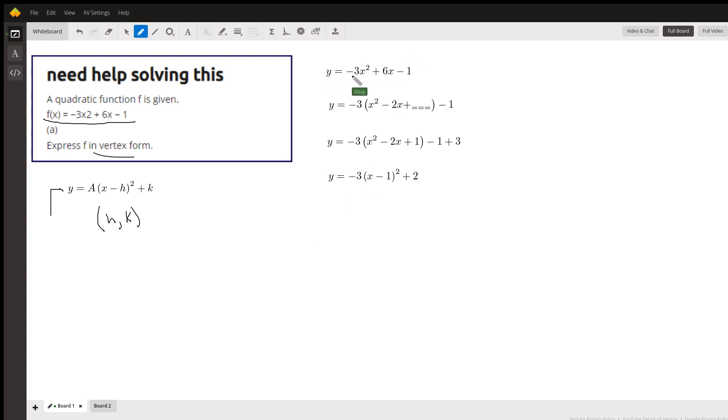The first thing you want to do is factor out that leading coefficient from the first two terms. So if I factor out a negative 3 from the first two terms, it's like I'm dividing by negative 3. So I'll get left inside the parentheses X squared minus 2X plus I'm going to leave a placeholder here for the process called completing the square. I want to convert this into a perfect square trinomial, the three terms in parentheses.